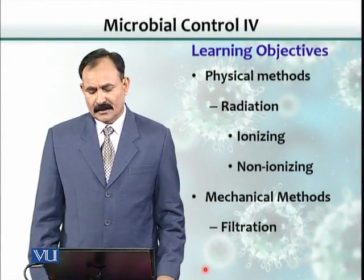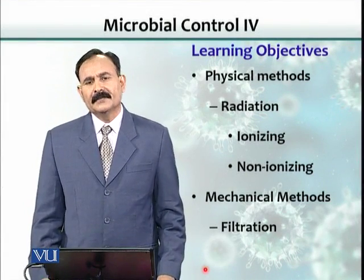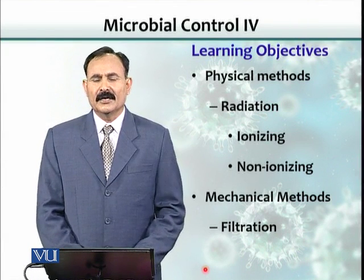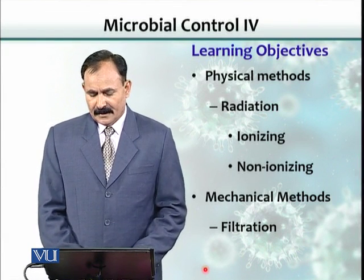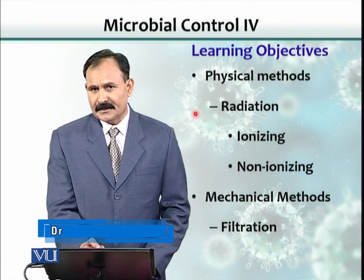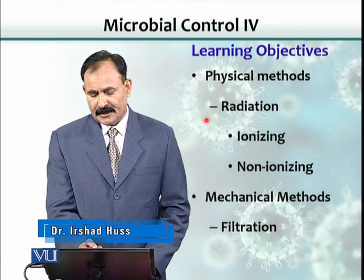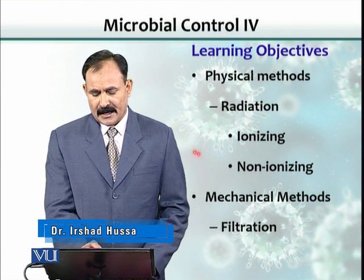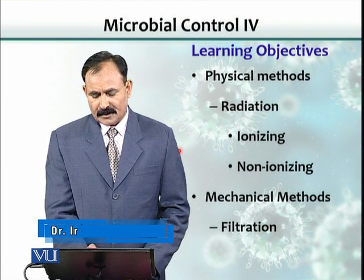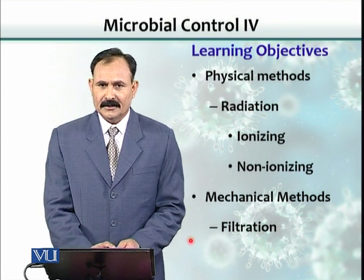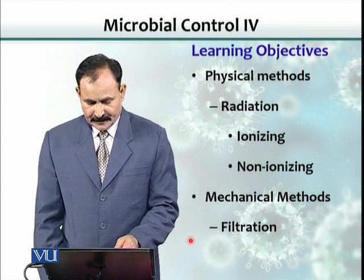Learning objectives include some other physical methods other than moist heat and dry heat. Radiation is another physical method, and it has two forms: ionizing radiation and non-ionizing radiation. We will also talk about mechanical methods, which include filtration to eliminate organisms from a sample.